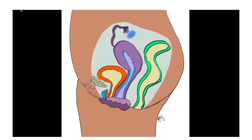Let's take a look at the basic arrangement of these female reproductive structures. Not all of these structures in this image are reproductive structures. This right here represents the rectum and the sigmoid colon, which is not part of the reproductive system. This right here is the urinary bladder, which also is not part of the reproductive system.